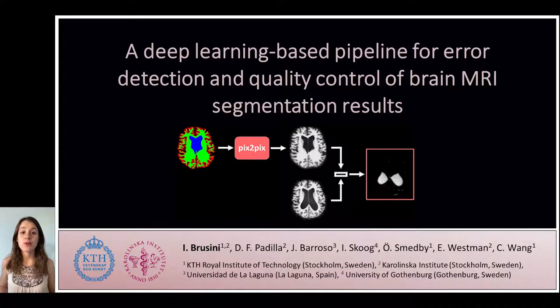In this study, we propose two deep learning based architectures for both performing quality control automatically and creating error maps that can help the rater to identify the error locations in the image.